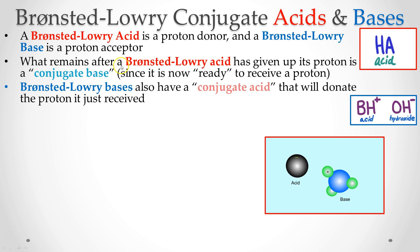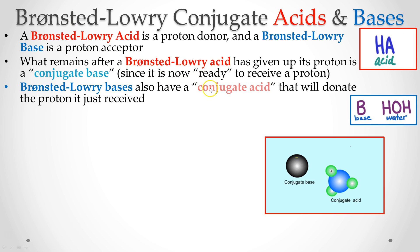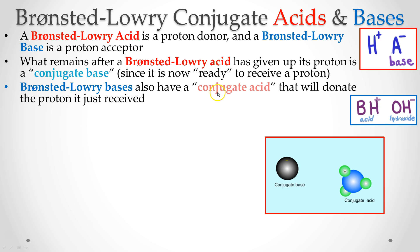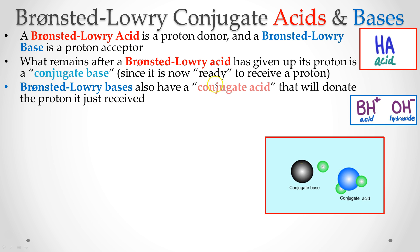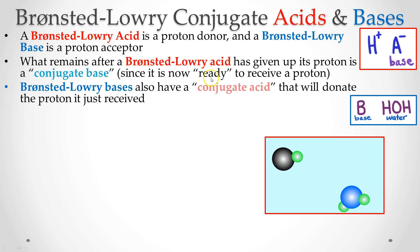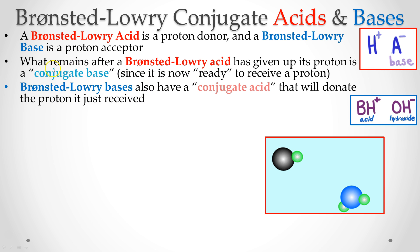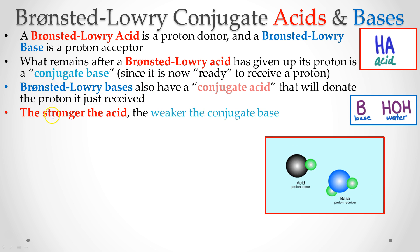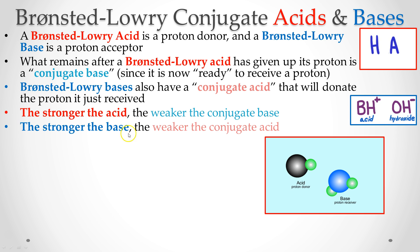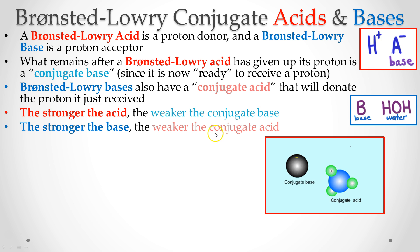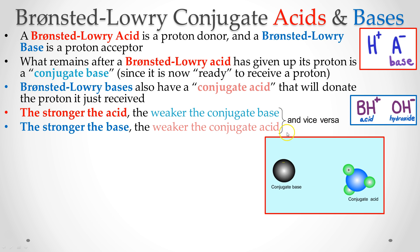The color coding here is not an accident. Acids are always in red, and conjugate acids are in light red, to indicate they are a little bit weaker than the original. The base is in dark blue, and the conjugate base is in light blue. The stronger the acid, the weaker the conjugate base. The stronger the base, the weaker the conjugate acid — as one goes up, the other goes down.